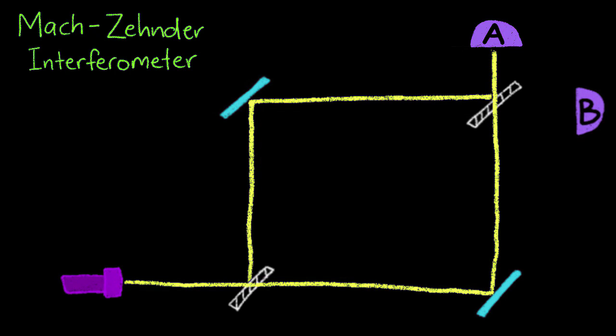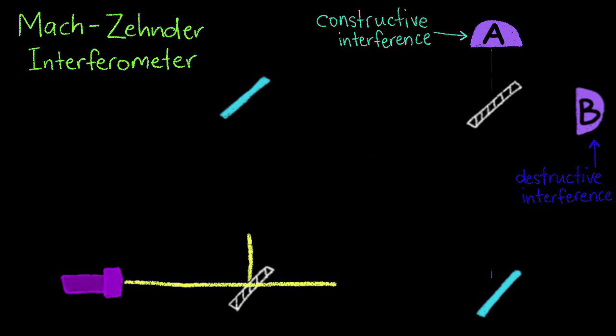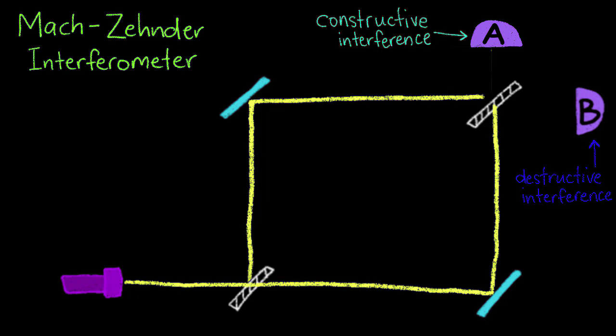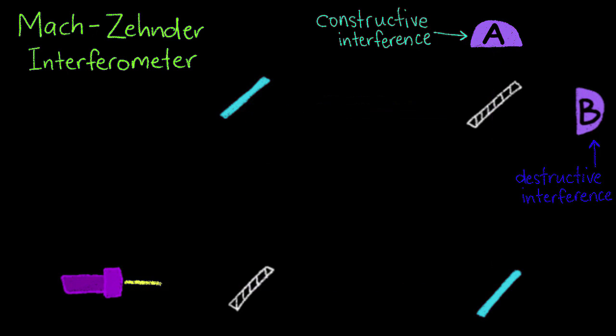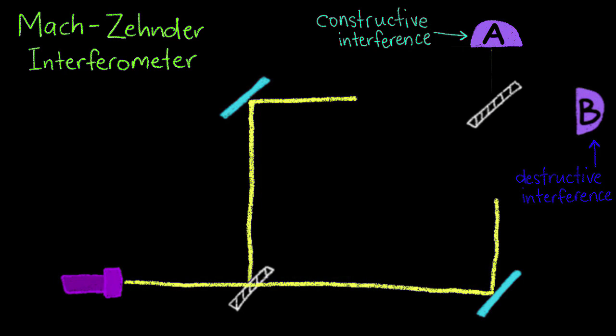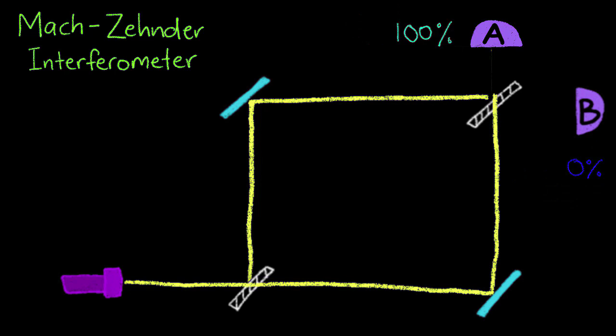Now, the setup is configured so that the beams constructively interfere on detector A and destructively interfere on detector B. I have an entire video which goes more into constructive and destructive interference called the double slit experiment, which I've linked in the description below. But all you really need to know here is that when the beams interfere at the second beam splitter, all of the light will show up on detector A. Detector B is left completely dark. So because of the way the setup is configured, 100% of the light shows up on detector A. Cool!